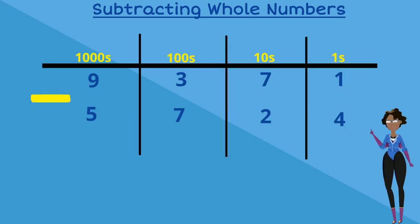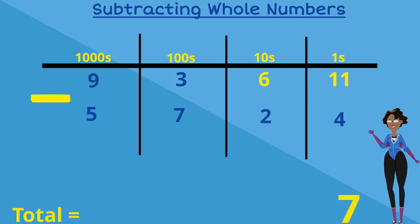In our ones column we have 1 subtract 4. 1 is smaller than 4, which means we need to borrow from the tens column. We will be borrowing one 10 from the 7 in the tens column, and that would make it 6. And when we add one 10 to the 1 in the ones column, it becomes 11. So now we have 11 minus 4, which is equal to 7.